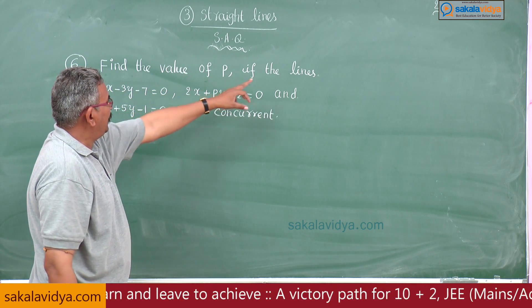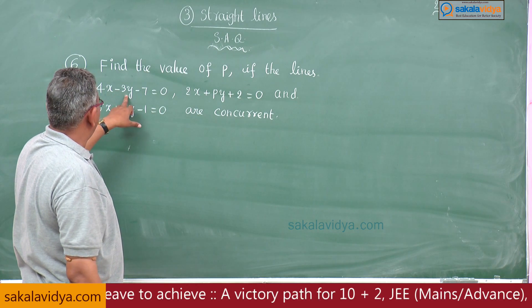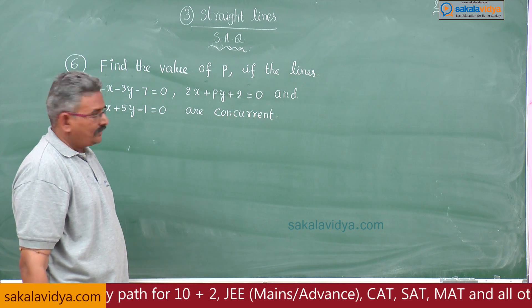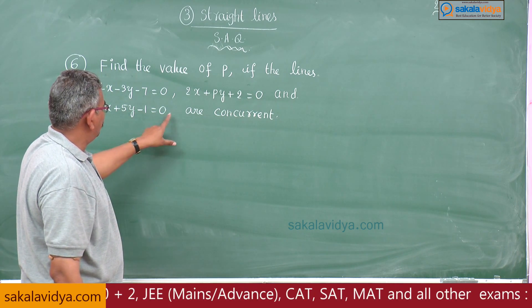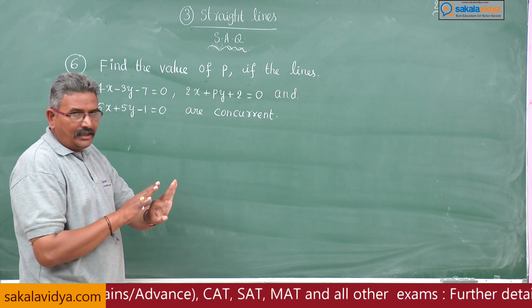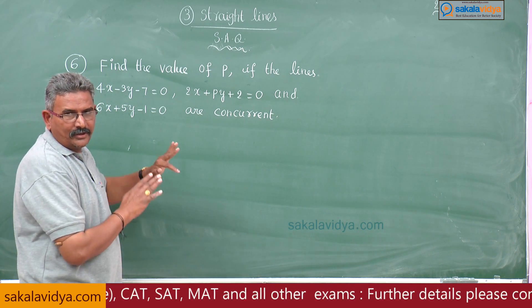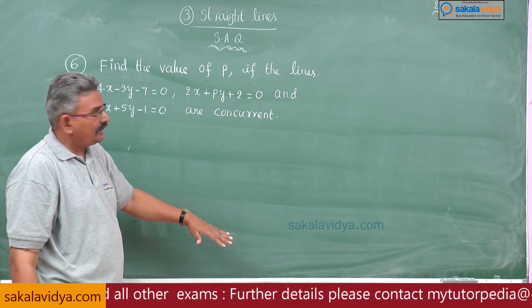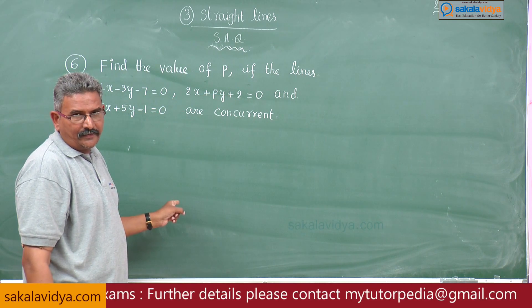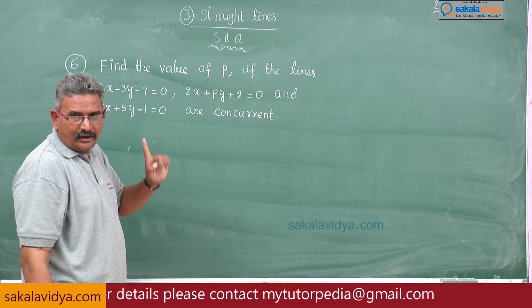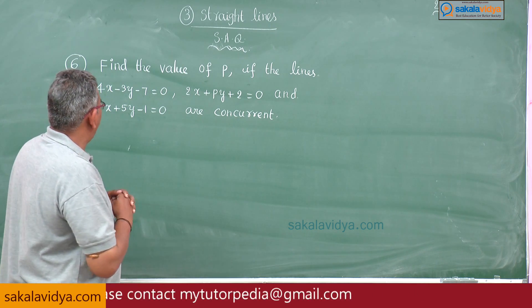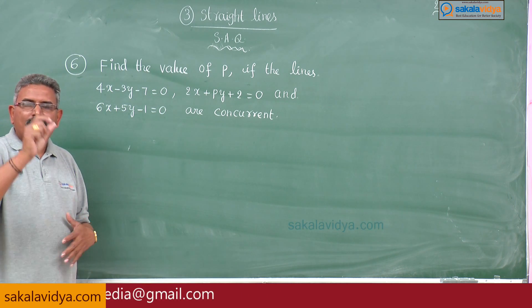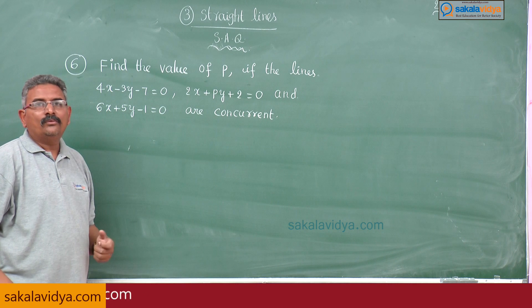Find the value of P if the lines 4x minus 3y minus 7 is equal to 0, 2x plus Py plus 2 is equal to 0, and 6x plus 5y minus 1 is equal to 0 are concurrent. These three lines are concurrent, so step one: solve the first equation and third equation for the point of intersection. The second line passes through the point of intersection of the first and third. Substitute the point of intersection into the second equation to get the value of P.